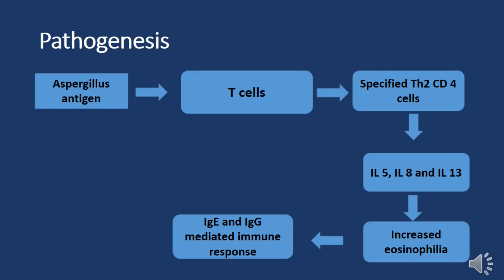In ABPA, there is a notable rise in Th2 CD4+ cell responses to aspergillus antigens, both locally in the bronchoalveolar lymphoid tissue and systemically. These aspergillus-responsive T-cells produce cytokines such as interleukins 4, 5, and 13, which trigger increases in blood and airway eosinophils and elevated levels of immunoglobulin E, contributing to characteristic inflammation and allergic responses.